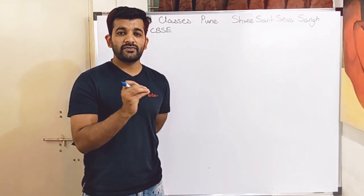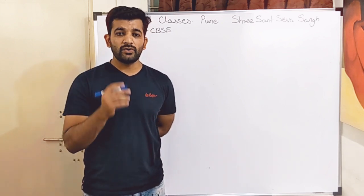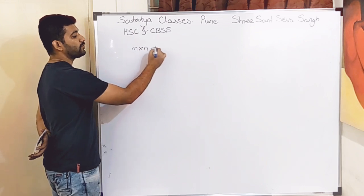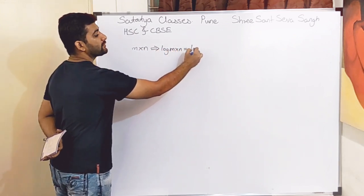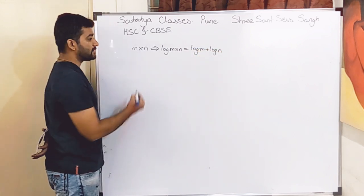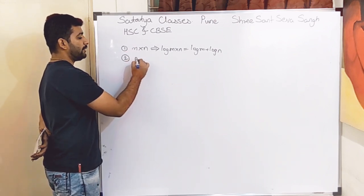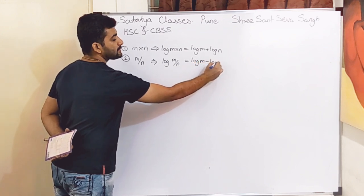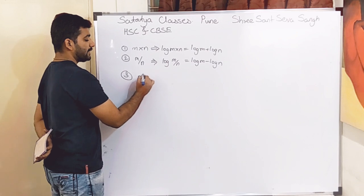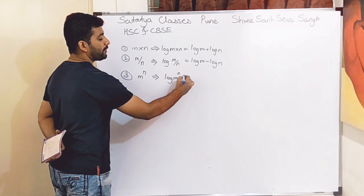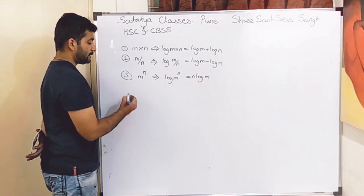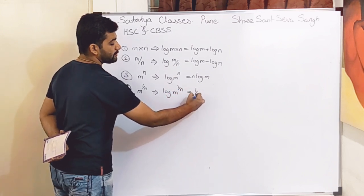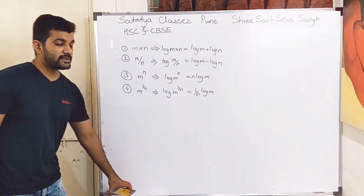So I have thought of first giving a lecture on log calculations. Before moving on, we will go with the basic formulas of mathematics. The first rule: log of m×n = log m + log n. Second rule: log of m/n = log m − log n. Third rule: log of m^n = n·log m. Fourth rule: log of m^(1/n) = (1/n)·log m.